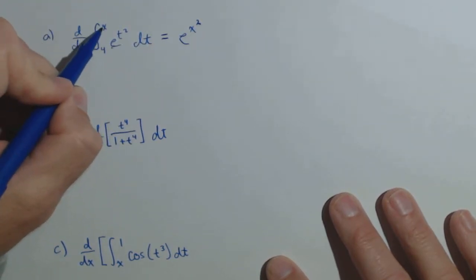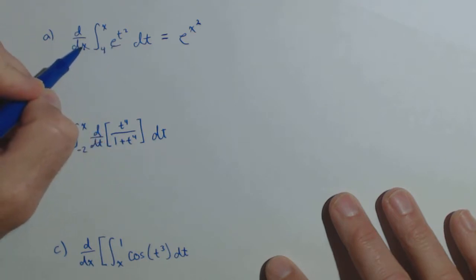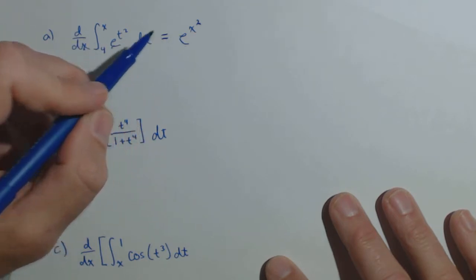Remember, this is a function with respect to x, t is just a dummy variable. So taking the derivative of it with respect to x just gives us e to the x squared.